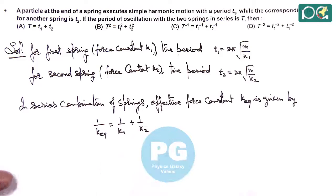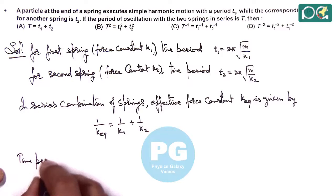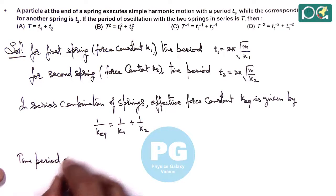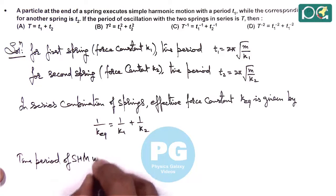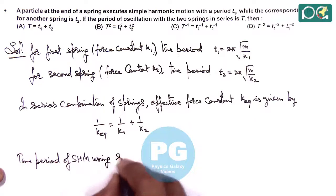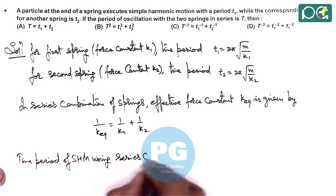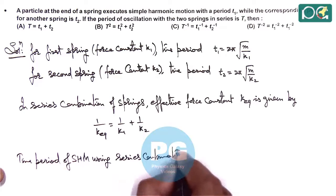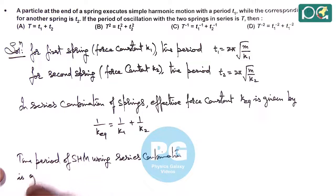The time period of SHM using series combination is given as T = 2π√(M/k_eq).